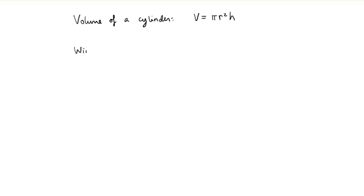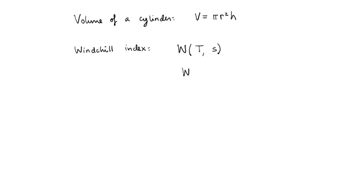Another example that is particularly relevant here in Alberta would be the windchill index. Let's call this function w. It takes as input the temperature and the speed of wind. For example, if it's minus five outside and the winds are 50 kilometers per hour, then the windchill might be something like minus 15.